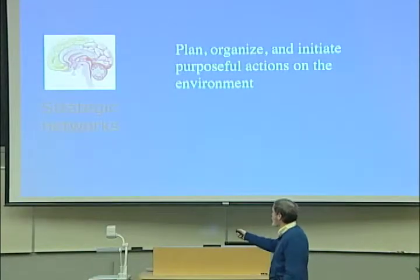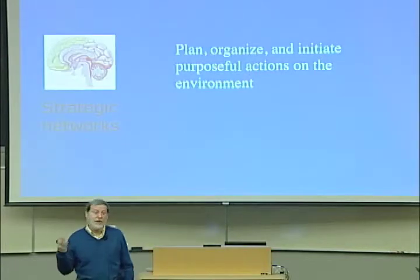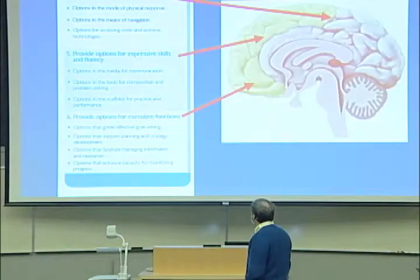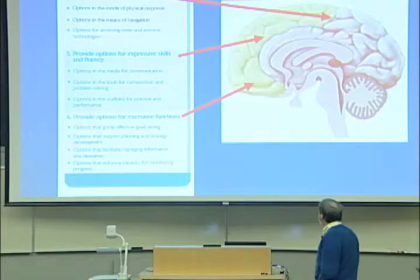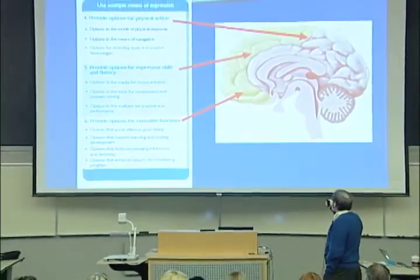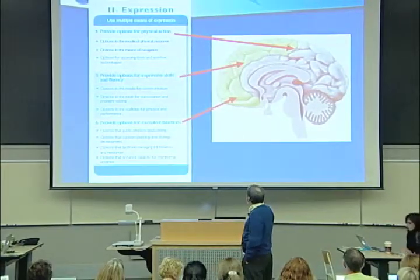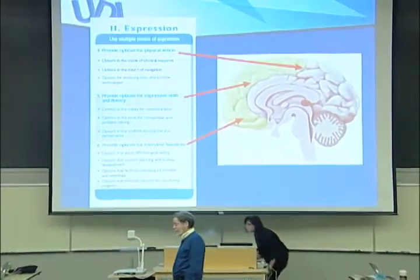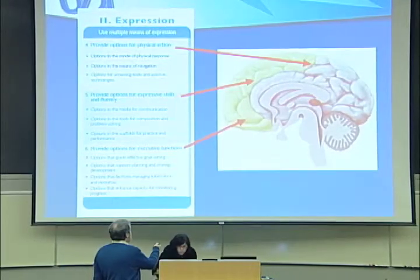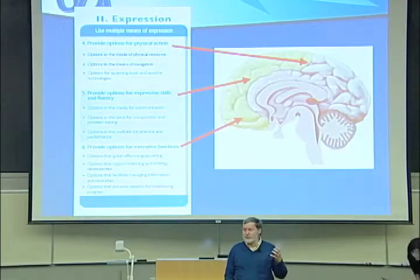The same is true up here in cortex. This is the part of your brain that, at base, allows you to move and act on the world. Right in the crown of your head are the parts of your brain that actually send axons down to your spinal cord to make movements happen.